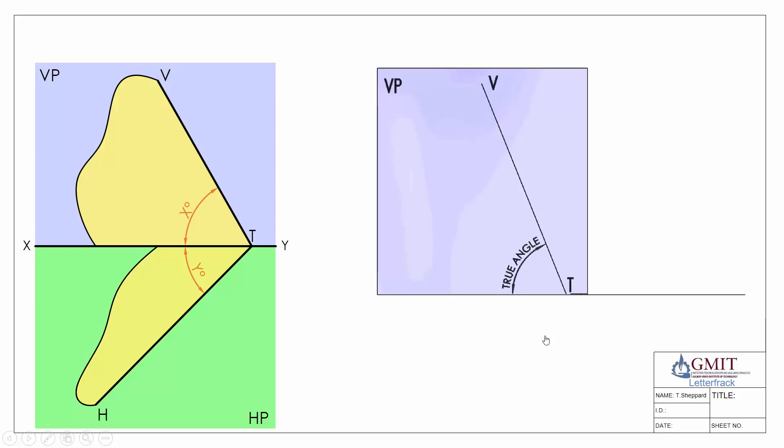In order to do that, we must locate our horizontal trace here as a point view. In our 2D, here's our horizontal trace like so. That gives us a direction to look along. We must look along this horizontal trace here and see it as a point view, and then we'll be able to see the plane as an edge.